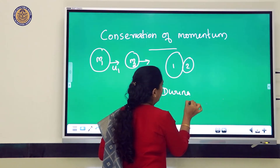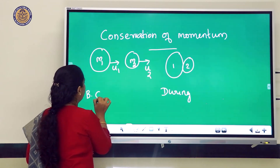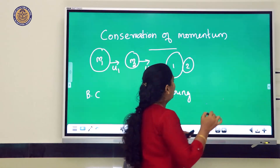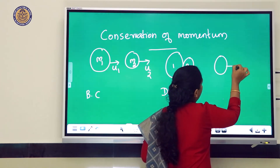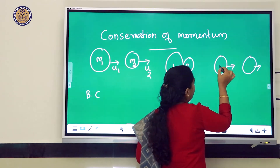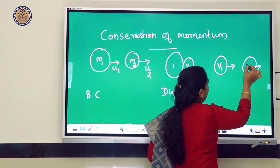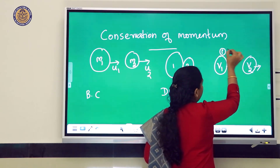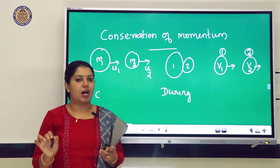The figure shows three stages: before collision, during collision, and after collision. After the collision, the first ball moves with final velocity v₁ and the second ball moves with final velocity v₂. The mass of each object remains unchanged.